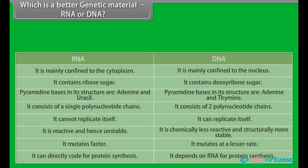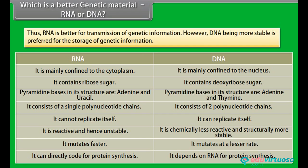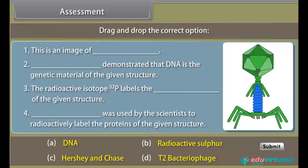Which is a better genetic material — RNA or DNA? RNA is better for transmission of genetic information. However, DNA, being more stable, is preferred for the storage of genetic information.